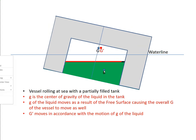As the vessel rolls, you can see that the center of gravity of the liquid in the tank has shifted to the low side. That has moved the center of gravity of the overall vessel from G to G prime. Not only did G prime slide over laterally, it also went up just a little bit, because there's more liquid on that side. The overall center of gravity follows a shift that is both transverse and slightly upward. This is the center of gravity of the vessel changing as a result of free surface.